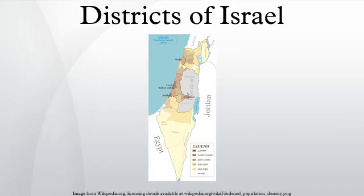Northern district: population 1,341,500; district capital: Nazareth. Sub-districts — Safed: population 113,000; Kinneret: population 108,800; Yizrael: population 476,300; Akko: population 598,500; Golan: population 44,900.